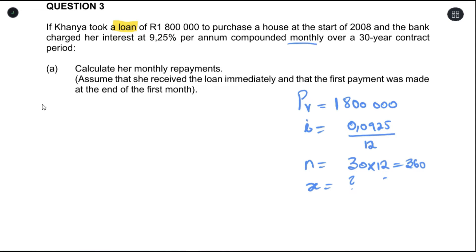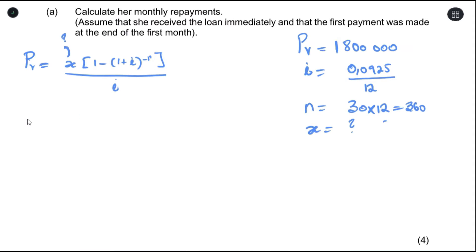The formula for present value annuity looks like this. Since we are trying to find this X, we're writing our formula so that X is the subject. Now we can substitute each of our values.